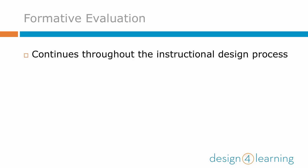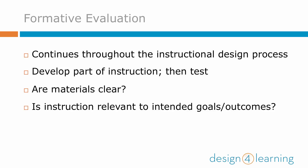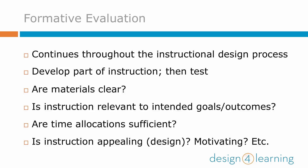Last week, we mentioned that instead of developing all your instructional materials at once in Step 6, you might want to develop a part of your instruction and then test it with a few individuals who are similar to your target learners. Your purpose would be to discover whether the materials were clear and understandable, if the instruction seemed relevant to the intended learning outcomes, if time allocated to synchronous activities were sufficient, and whether learners found the instruction to be appealing and motivating. What you learn from the feedback you receive can help you improve your instructional design before you commit to creating or accessing all the materials you'll eventually need.